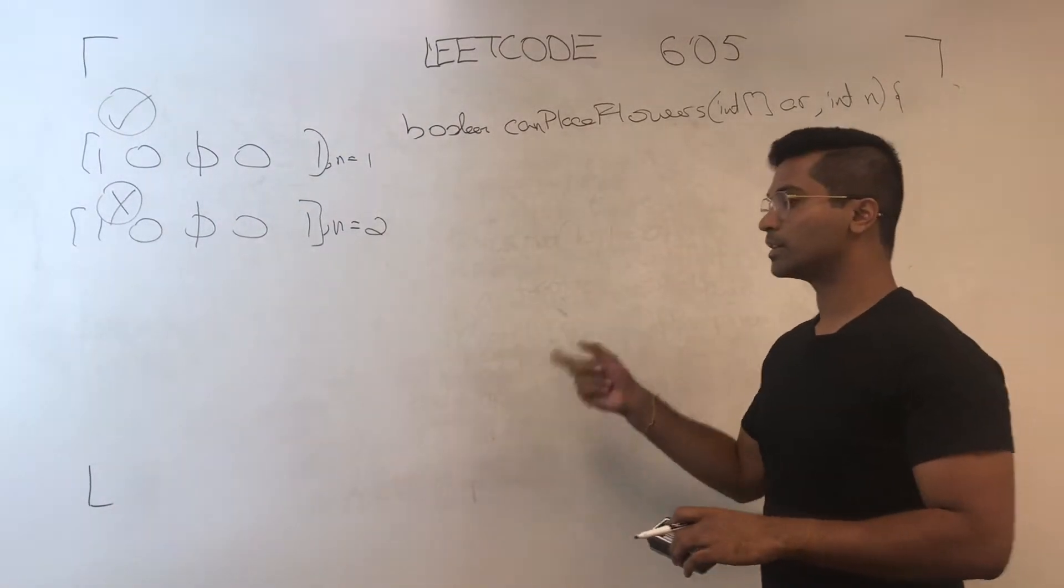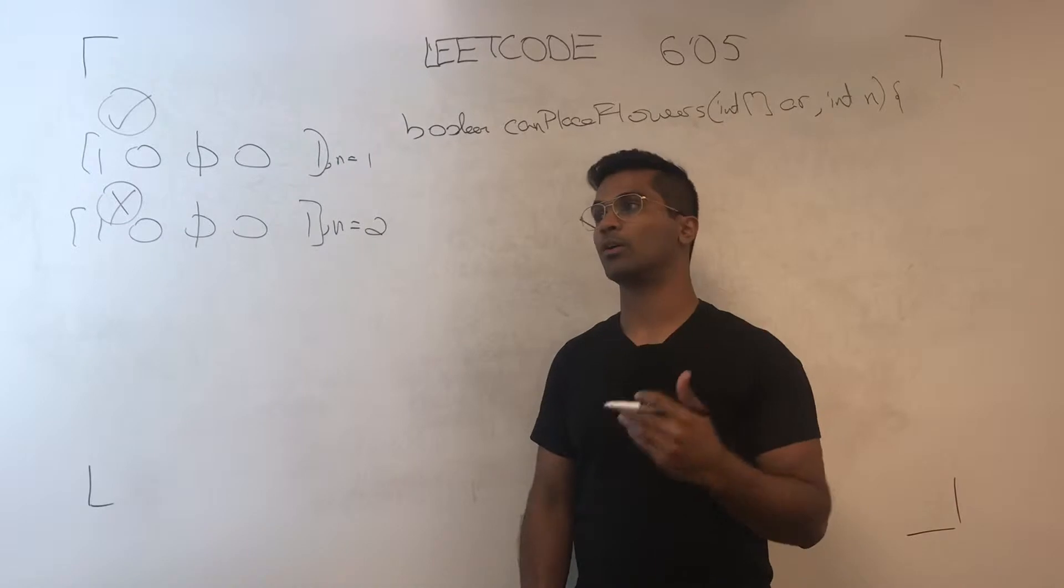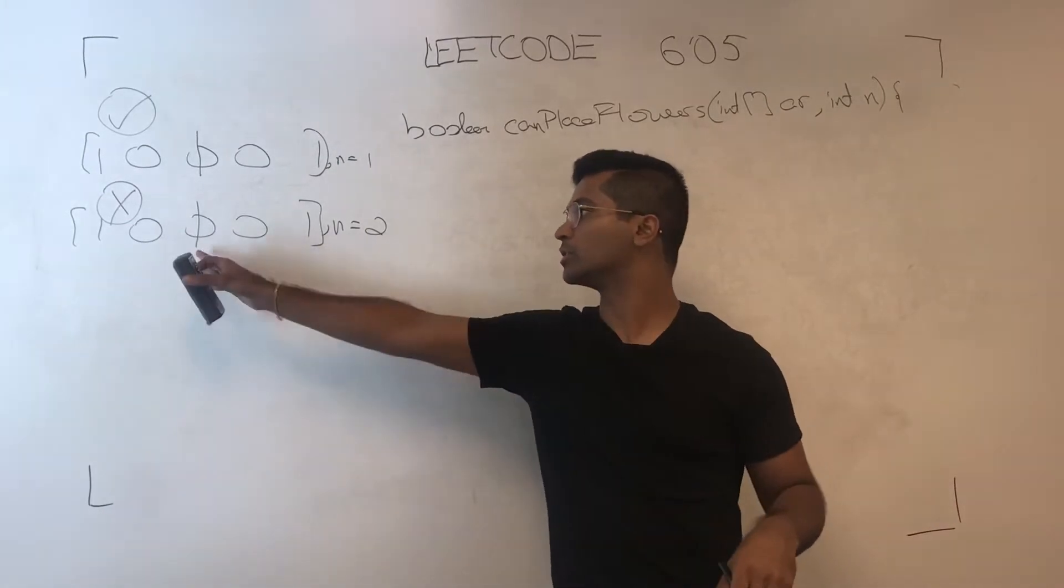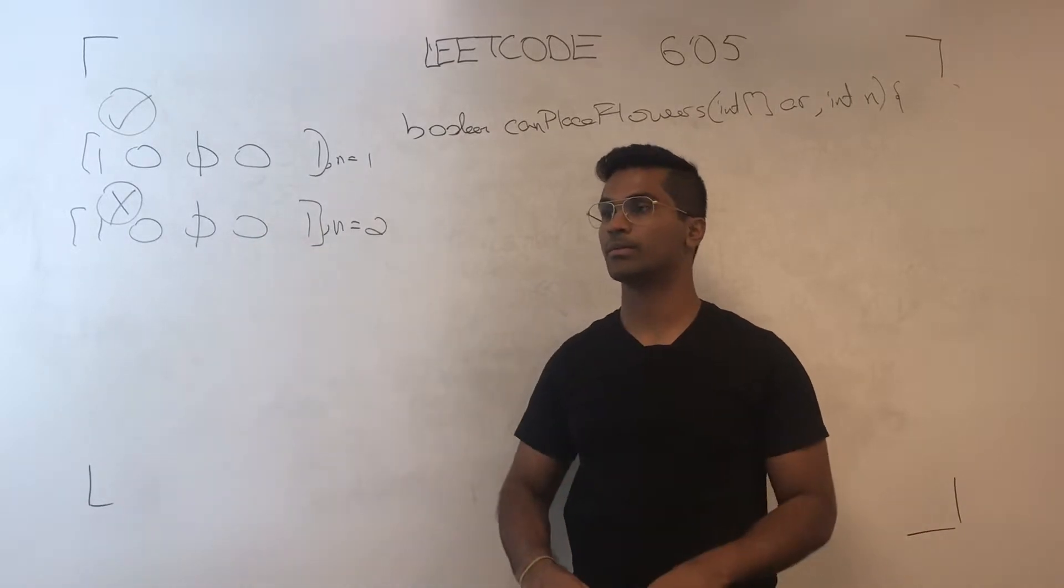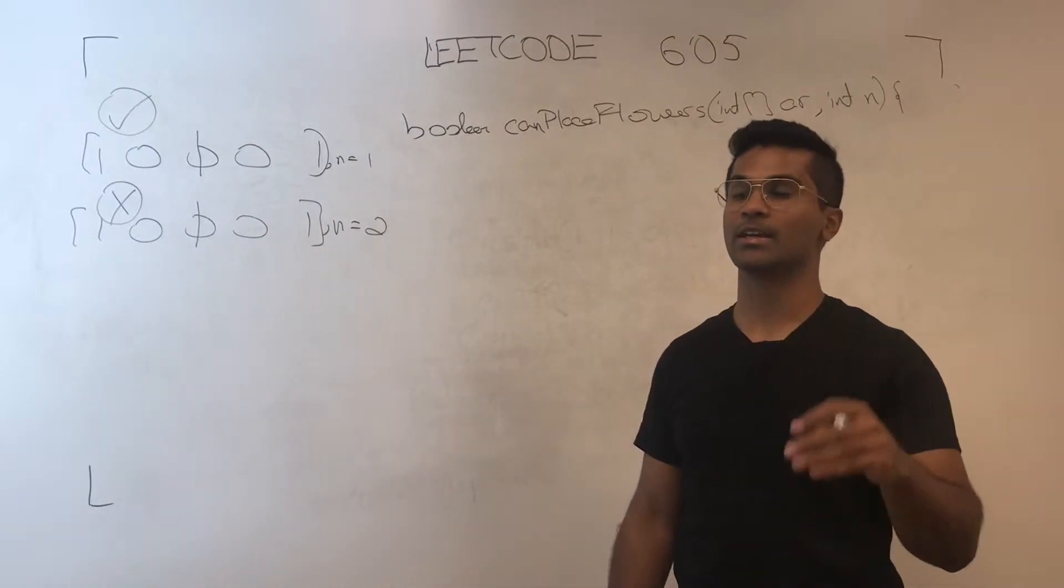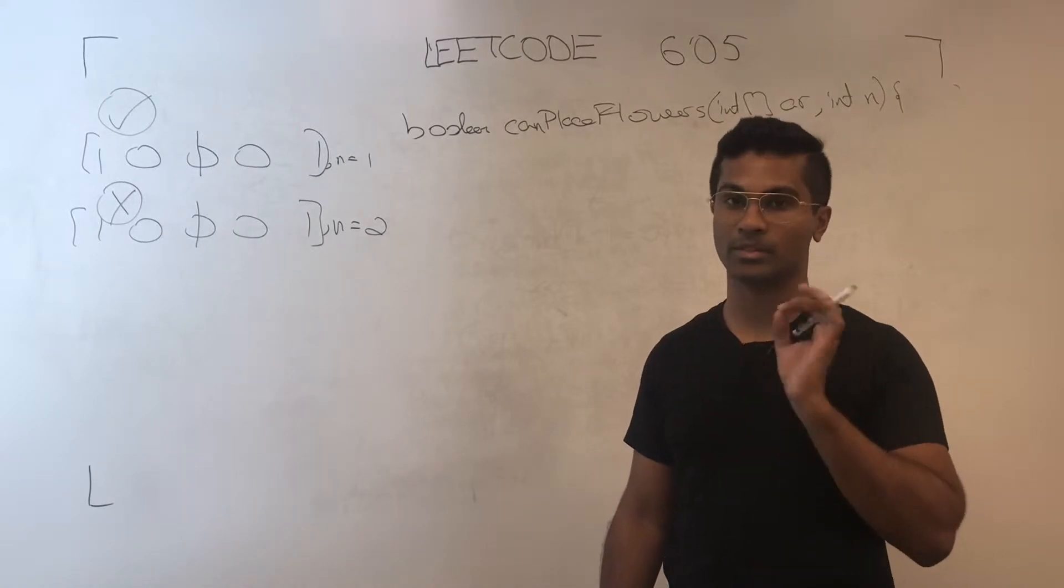Now the trick to this is that as we go along, we actually set zero to one, which implies that we're planting a flower in an empty spot.